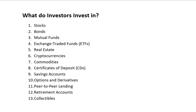Seventh is commodities. Commodities encompass physical goods like gold, silver, oil, or agricultural products. Investors can buy commodities directly or invest in commodities-related funds. Eighth is certificates of deposit, provided by banks with constant interest rates and maturity dates. They are considered low risk and investors receive their principal and interest upon maturity. Ninth is savings accounts. While not typically considered an investment, savings accounts provide a safe place to store cash and earn interest, though returns are generally lower compared to other investment options.